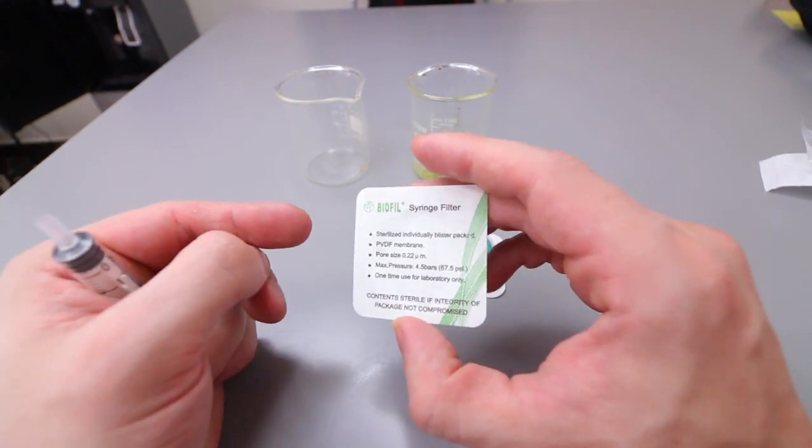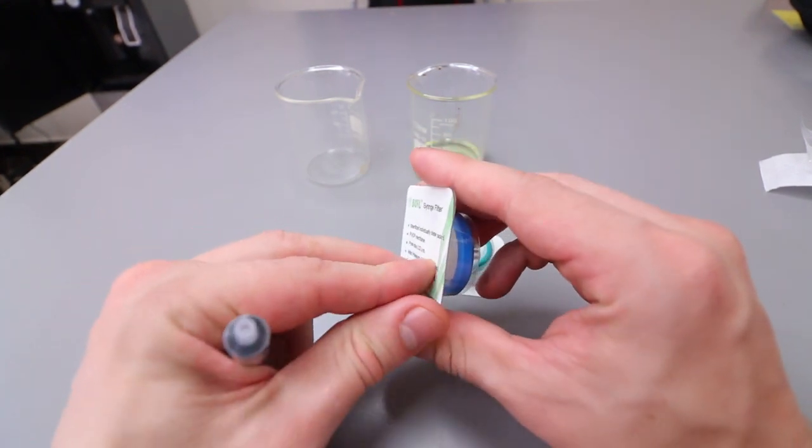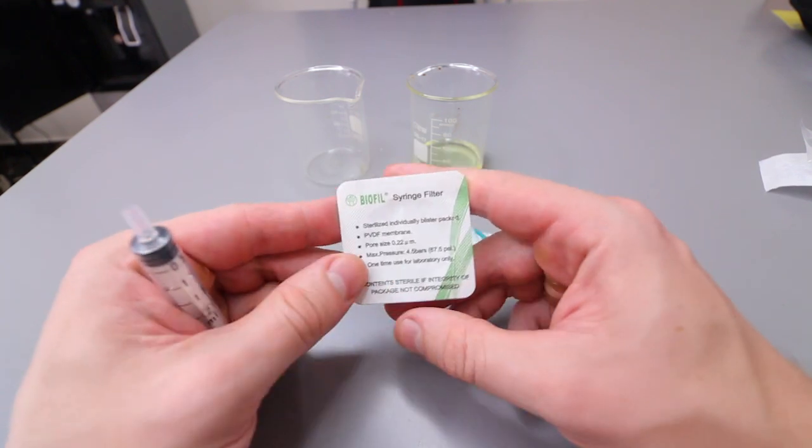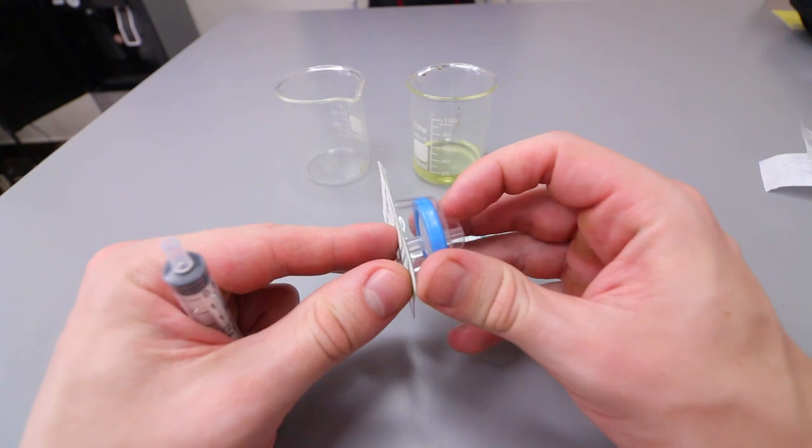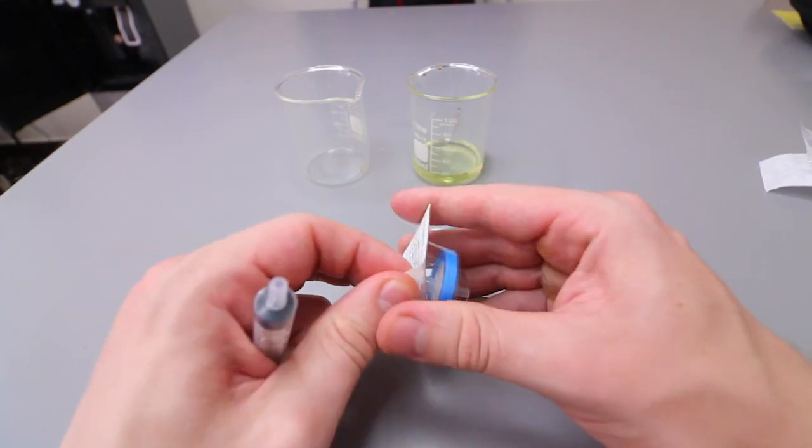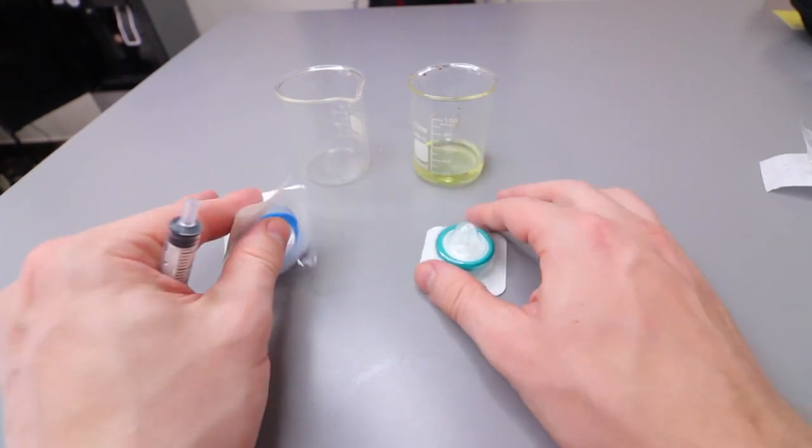You can also use nylon if you want, but also the pore size as well. You want 0.22 just to ensure there's no bacteria that's going to be able to get through. But you also want to be looking at the PSI and I'm going to show you why.